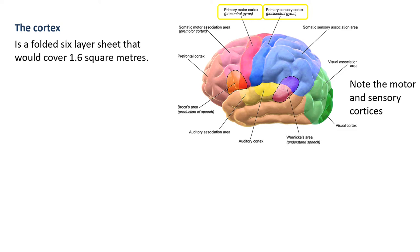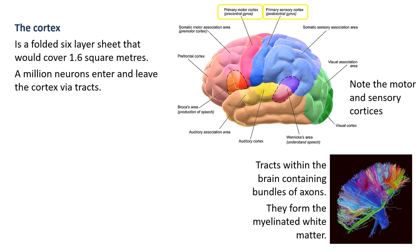I've circled in yellow the motor and the sensory cortex - or cortices, plural. These both form sort of parallel slices within the middle of the cortex. The cortex has lots of its own neurons, but it needs information coming in and going out - action potentials in, action potentials out. Action potentials travel along neurons, so we have about a million neurons entering or leaving the cortex. They do this via tracts - tracts are bundles of myelinated axons running together. They are the equivalent of nerves within the central nervous system.